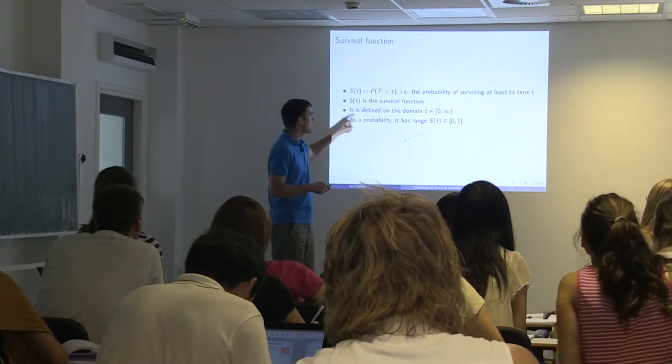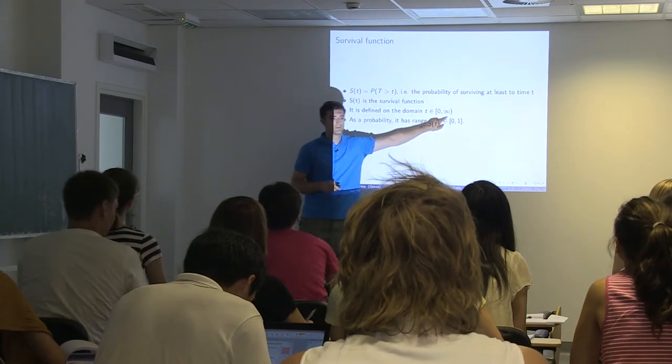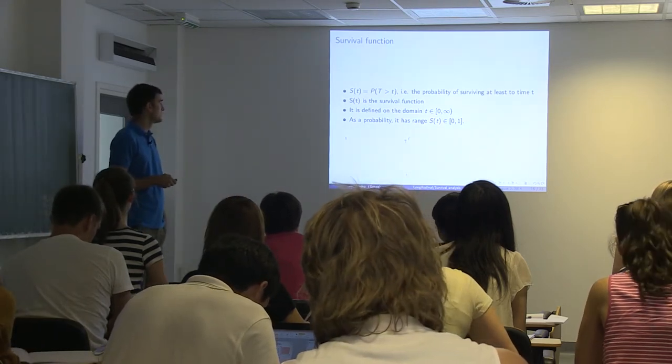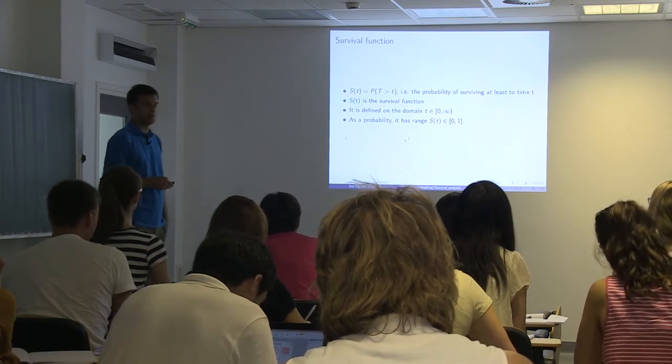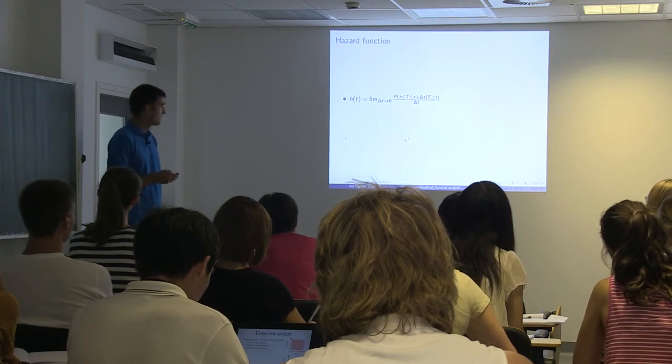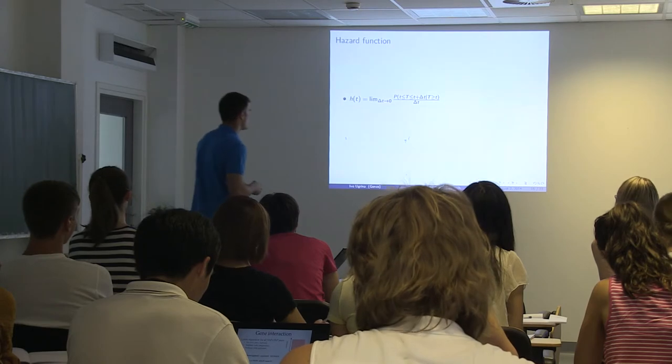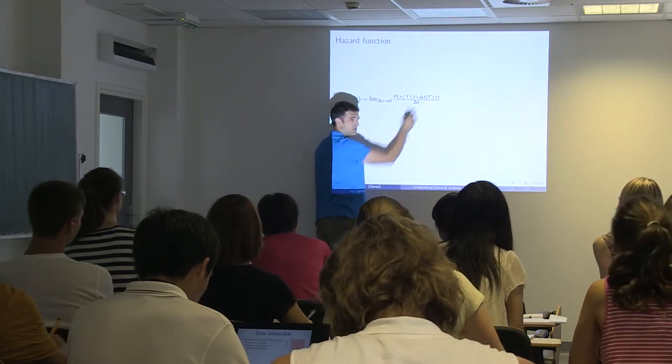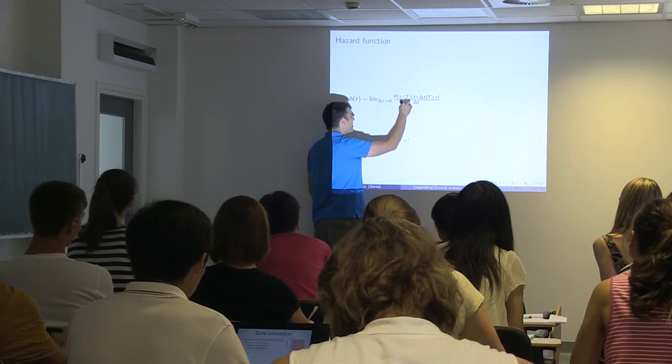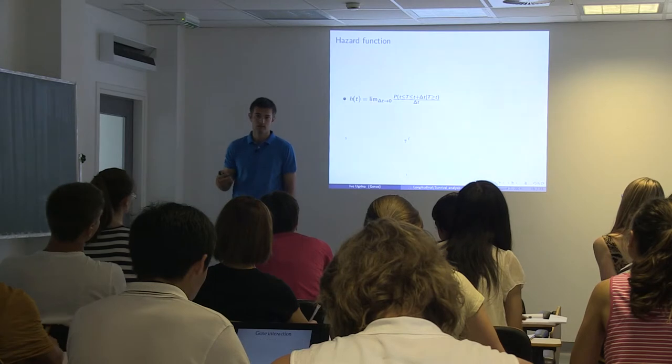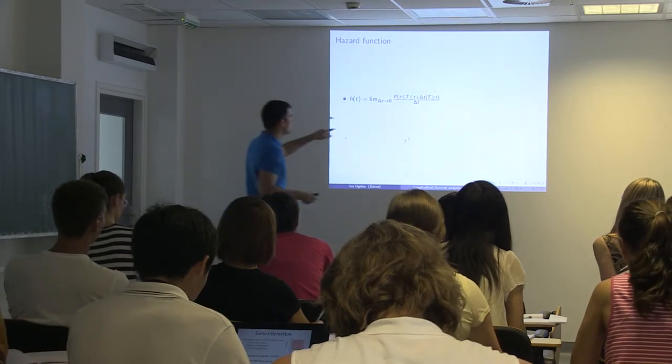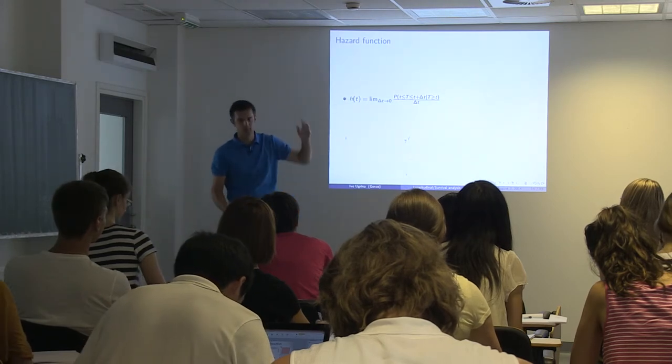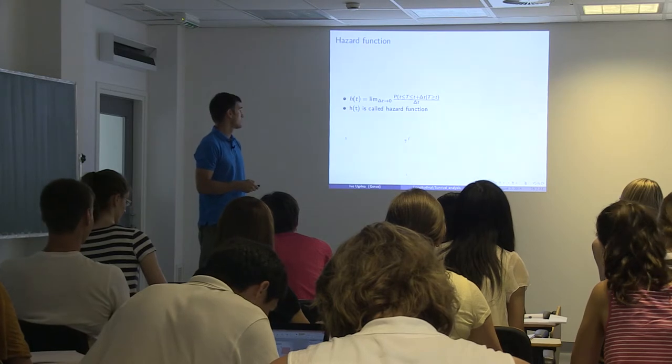So the most important thing in survival analysis, one of two most important things in survival analysis is survival function, which says basically this is a probability of surviving at least to time t. Your survival time will be greater than small t. s(t) is called survival function. It is defined on the domain 0 to infinity. It's not that realistic to be infinity, but you define it like that. It's easier from a mathematical point of view. And as a probability it has range from 0 to 1. And the second thing is hazard function. This is a strange notation, but in the end it says something like this. What is the probability that if you survived till time t, you're going to die immediately after that t? It's a hazard in the moment of t. That's why you have limit as delta t goes to 0. This looks something like maybe derivation if you know mathematical rules or something like that.